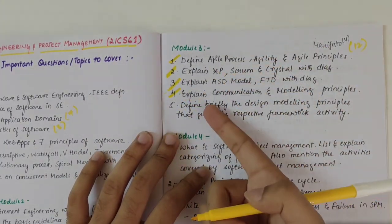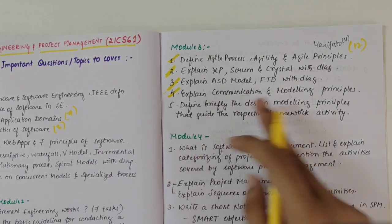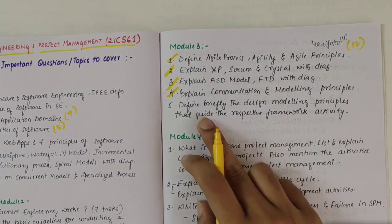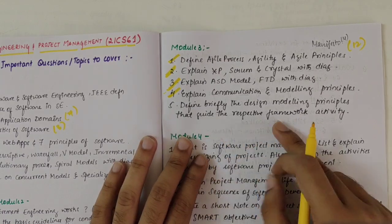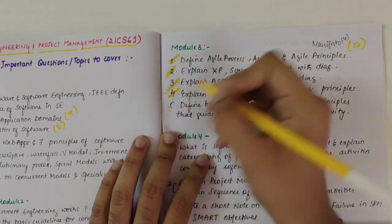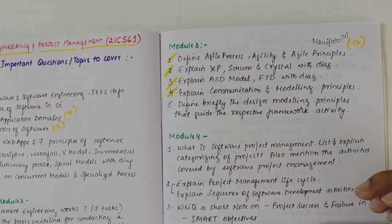Then explain communication and modeling principles. Here again we have four types of principles like different topics. Out of that communication and modeling are the important ones. Then define briefly the design modeling principles that guide the respective framework activity. This is again important topic.